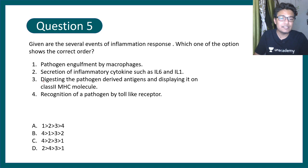Option 3 says the digestion of the pathogen derived antigen and displaying it on class 2 MHC molecule. Fourth statement says recognition of the pathogen by toll-like receptor.